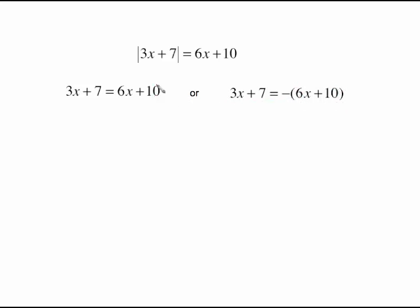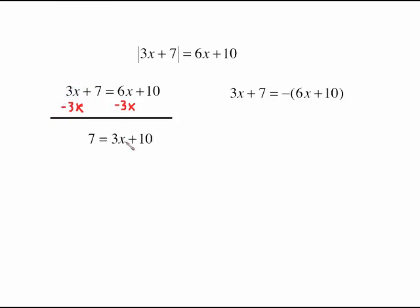Let's go back to the positive case and solve that. It's just a simple algebra one equation. Subtract 3x from both sides — those cancel — giving us 7 equals 3x plus 10. Subtract 10 from both sides; those cancel, giving negative 3 equals 3x. Divide both sides by 3 and we have x equals negative 1.